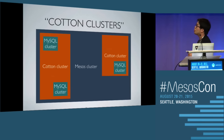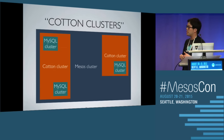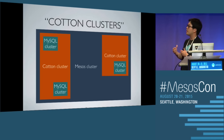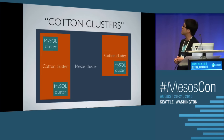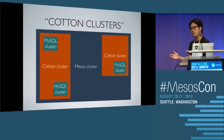Let me clarify a couple of terms. When I say Cotton cluster, the entire box is the Mesos cluster consisting of all the hosts. A Cotton cluster is the collection of all MySQL clusters managed by one instance of the Cotton service. Within one Mesos cluster you can launch multiple copies of the Cotton scheduler, so you can have different Cotton clusters.